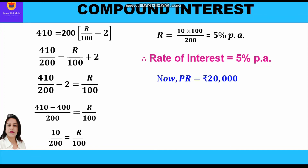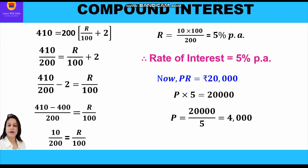Now, from the first equation PR = 20,000, we put the value of R = 5%: P × 5 = 20,000, so P = 20,000 / 5 = 4,000. Therefore, the principal is rupees 4,000.